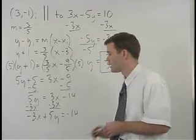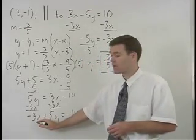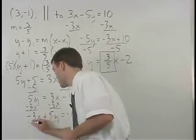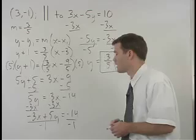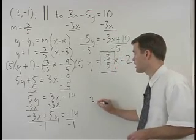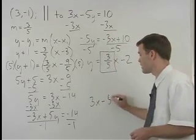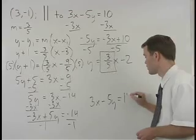Finally, make the coefficient of your x term positive by dividing both sides by negative 1, and our final equation reads 3x minus 5y equals 14.